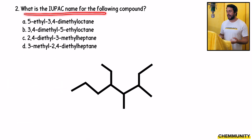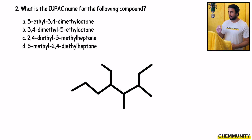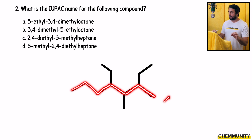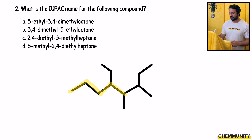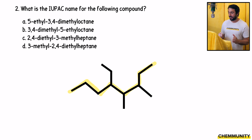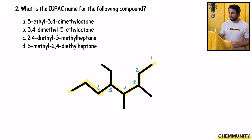Number two: what is the IUPAC name for the following compound? We need to find the longest carbon chain — this is not always going to be just the chain given to you from left to right. We need to make sure we get the longest one possible. This one snakes up over here; that is going to be the longest carbon chain. We number right to left: one, two, three, four, five, six, seven, eight — because we have a substituent on three.